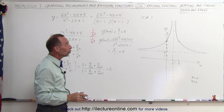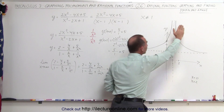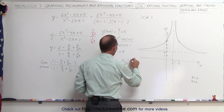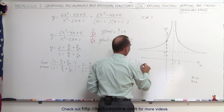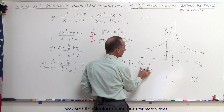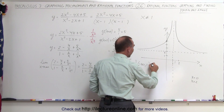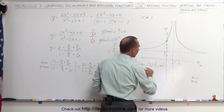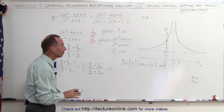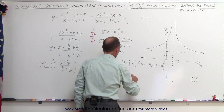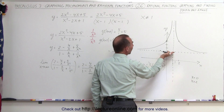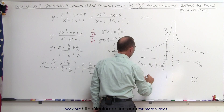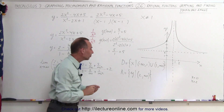Now we determine the domain and range. For the domain, the only restriction is that x cannot equal 1. x can go to positive or negative infinity, but not equal 1. So the domain is (negative infinity, 1) union (1, infinity). For the range, y can approach but never reach y equals 2 from above, so the range is (2, infinity) — not including 2 or infinity.